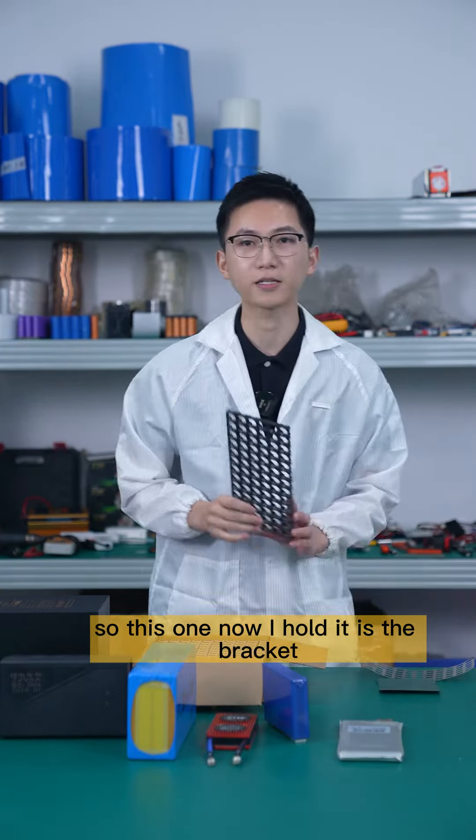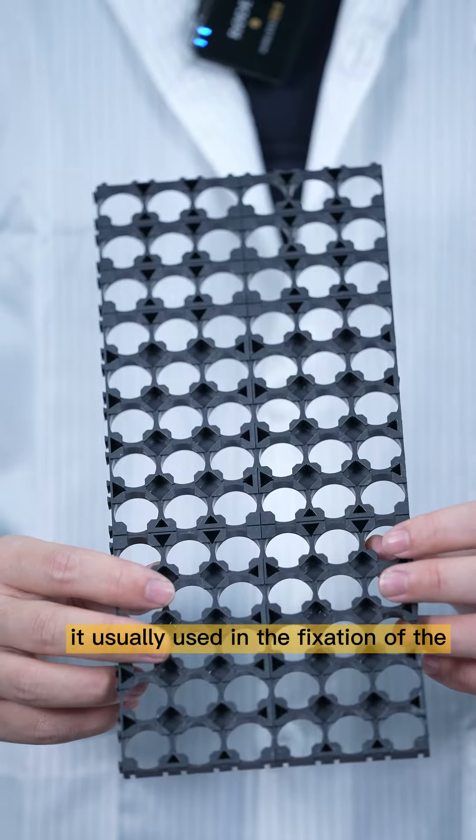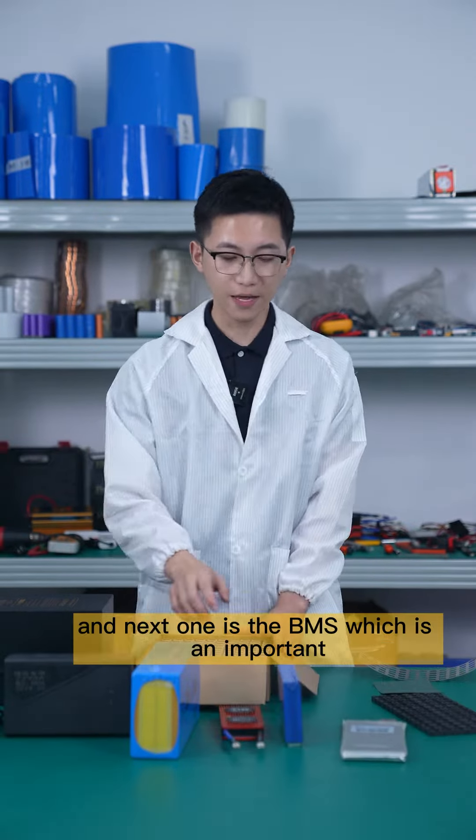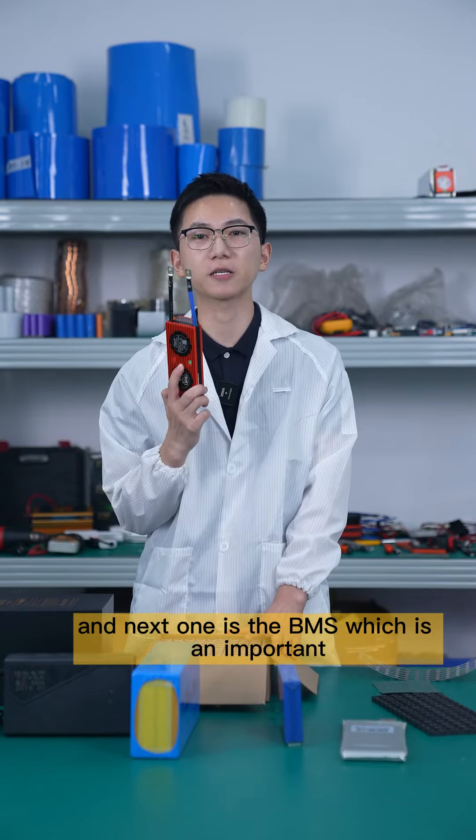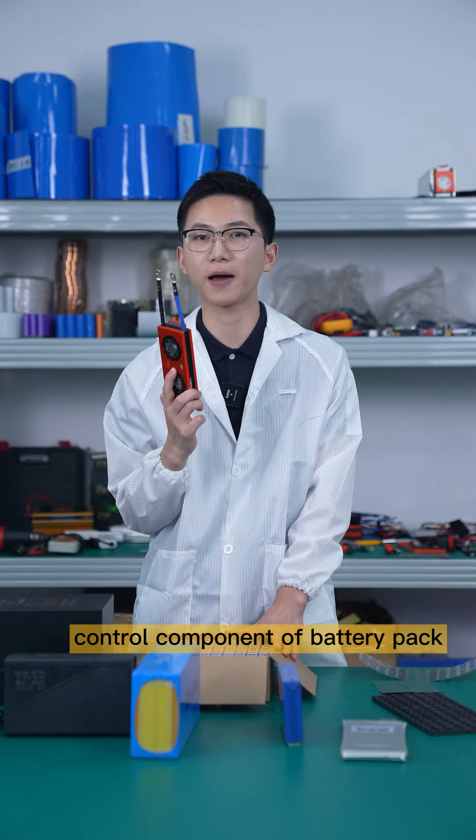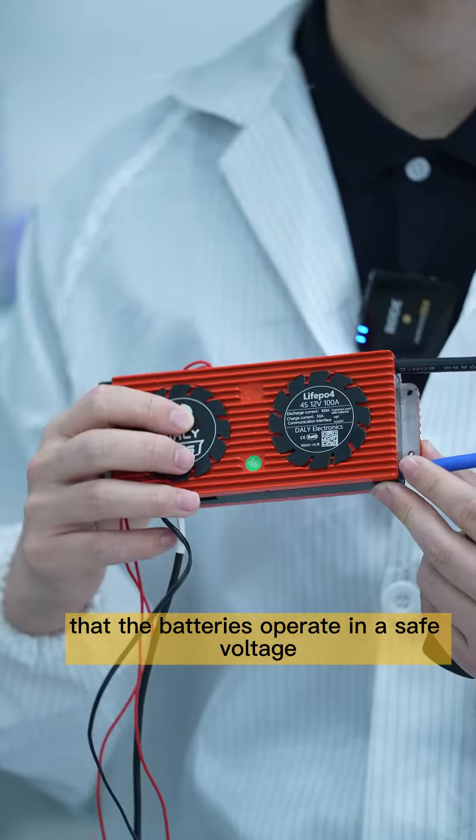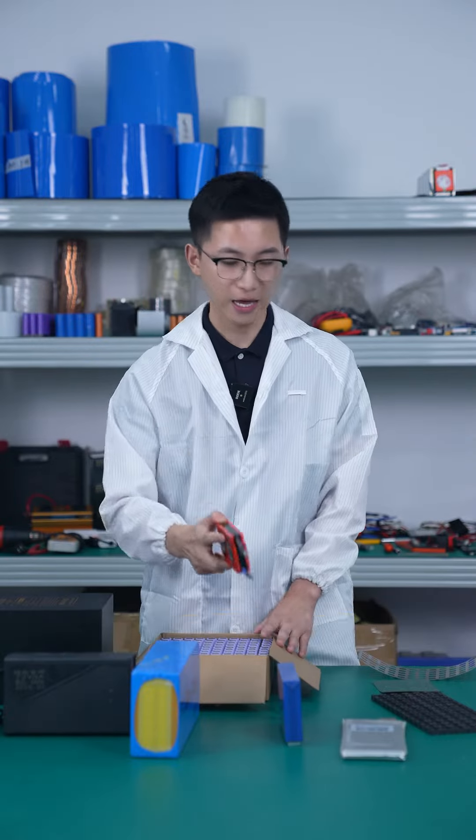This one I'm holding now is the bracket. It's usually used in the fixation of cylindrical cells. Next is the BMS, which is an important control component of the battery pack. It can ensure that the battery operates in a safe voltage.